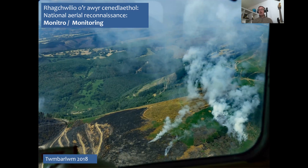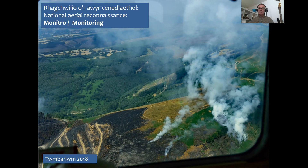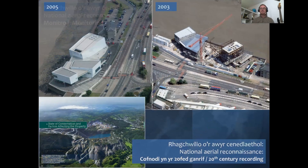We also monitor scheduled monuments, like Twyn Barlwm here — the Iron Age hillfort and motte and bailey just above Newport. On the 19th of July 2018, when most of the South Wales valleys had brush fires and grassland fires and were very dry, the pilot couldn't fly through the smoke with a fire at Twyn Barlwm because there was a hazard to fly. So this is me photographing the site across the pilot's lap — a very sad sight to see the site on fire. Cadw then commissioned some drone surveys afterwards to record the damage on the monument.